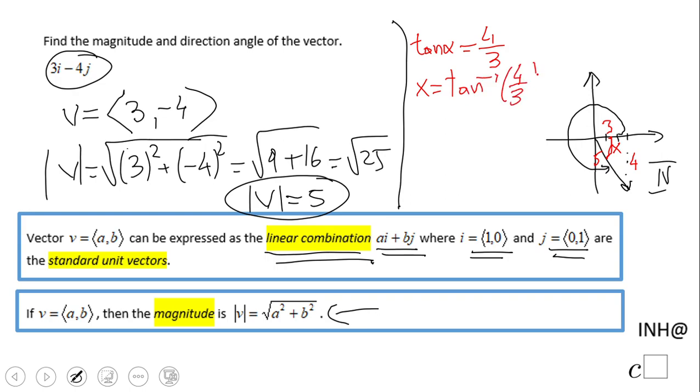Inverse tangent, and then we're going to use a calculator. And I end up with an angle x of 53 degrees, 53.1 degrees rounded to the nearest tenth.